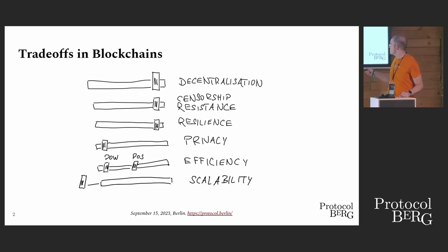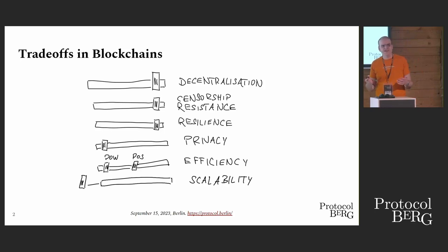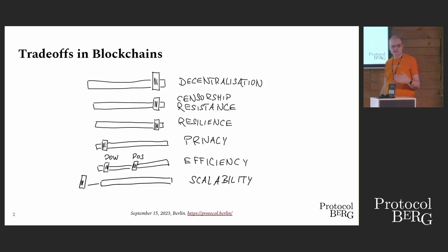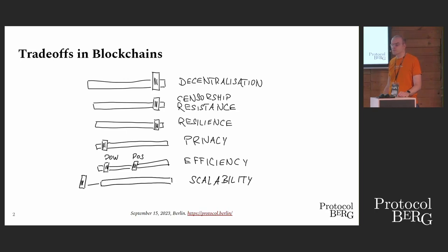Efficiency is also not the strongest point of blockchains. Proof of work, in the early days when it was one CPU per participant, was fine — but that's not the world we live in anymore. Proof of stake made a significant improvement in efficiency because the resource you compete with to win block production rights is not a physical resource like computing time.